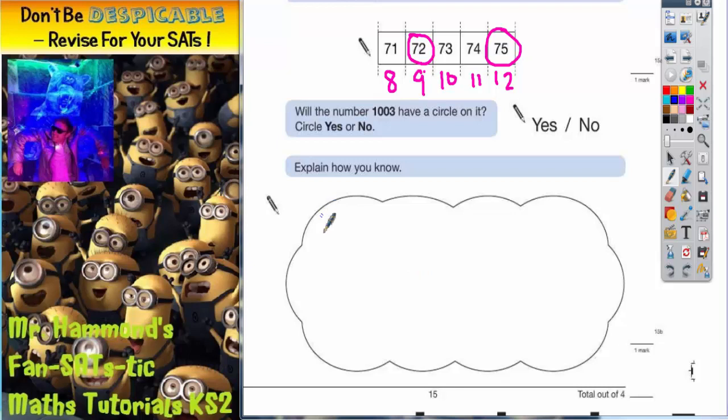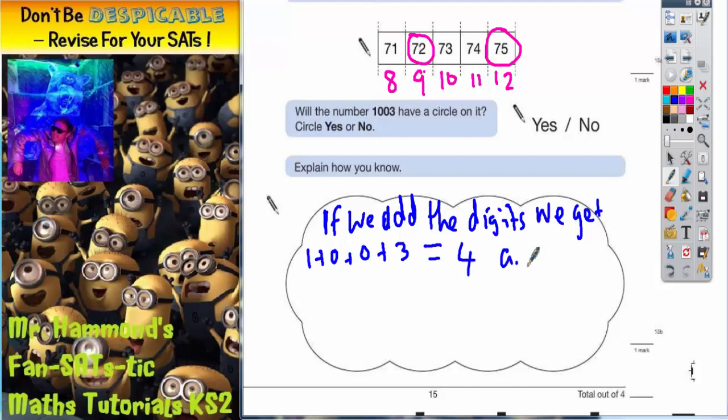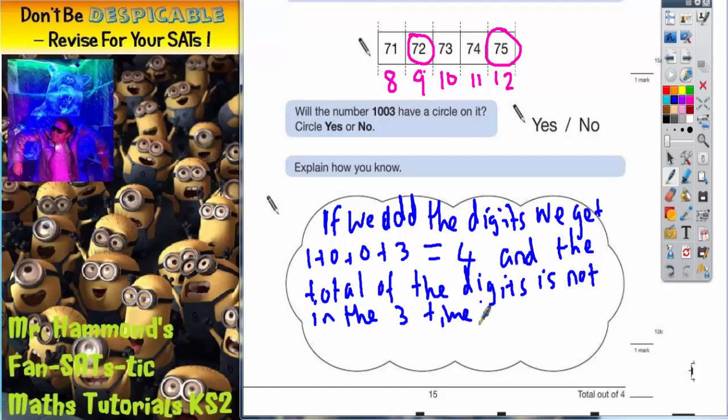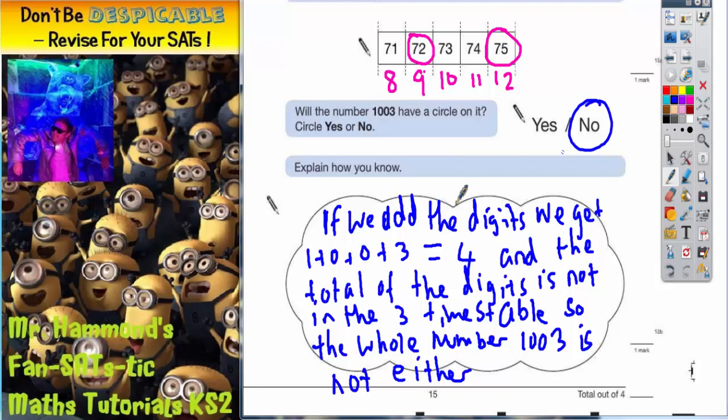And all you need to do there is explain that rule that I've just taught you. So if we add the digits we get 1 plus 0 plus 0 plus 3, which equals 4. And the total of the digits is not in the 3 times table, so the whole number 1003 is not either. So the correct answer is no.